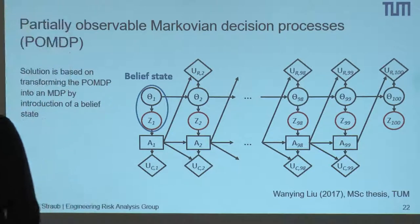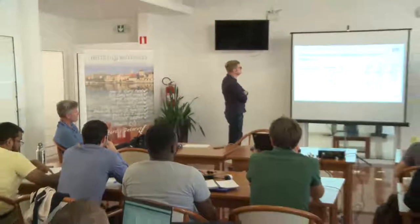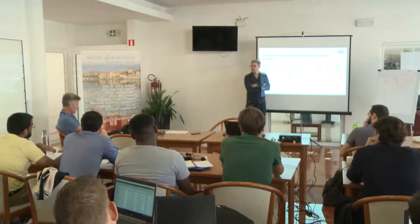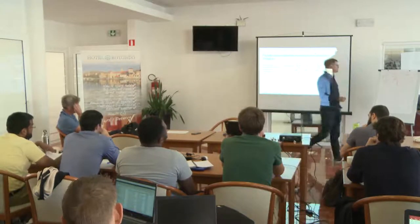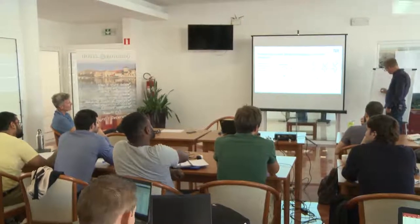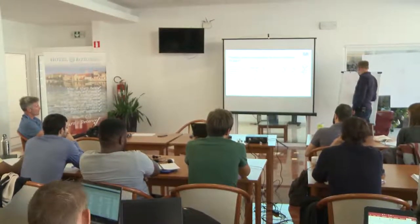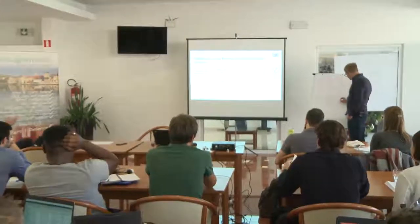In the POMDP framework, you reduce the problem by introducing the belief state B1, B2, and so on, with actions A. You use this Markovian property so that the network becomes conditionally independent given the belief state. To establish this network, you apply Bayes' rule: B1 is the posterior distribution at time one, and then B2 given B1 and the decision requires considering all possible observations you can make, doing a Bayesian update to get the conditional distribution. This you can do locally as a sequence of Bayesian analyses.